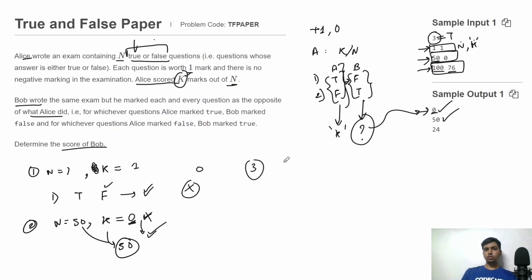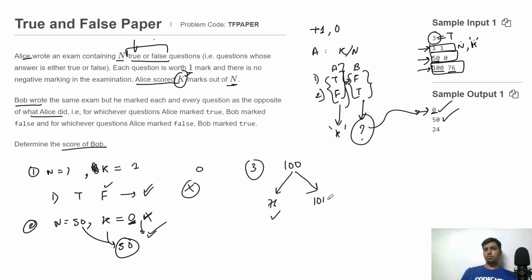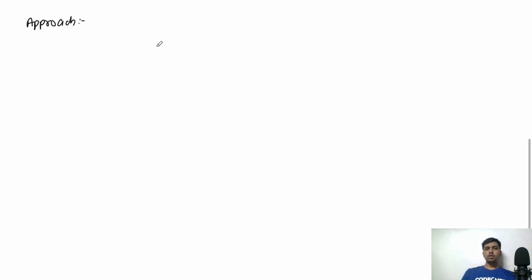In the third test case, there are 100 questions and Alice marked 76 as correct. Whatever questions Alice got correct, Bob will get incorrect, since Bob marks the opposite. So the answer is simply 100 minus 76, which gives 24. The output for the third test case is 24.